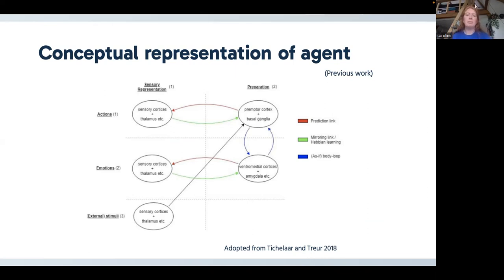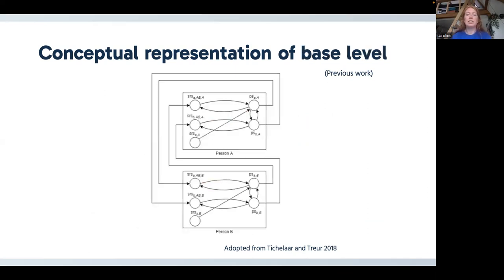And we made this representation into a model. And this is the interaction between two agents. So we have person A and person B. And we can see those sensory representation states and preparation states for actions and emotions in both agents and how they link to each other. And those are linked between each other with those bonding links we talked about earlier. And within the person we see Hebbian learning links.